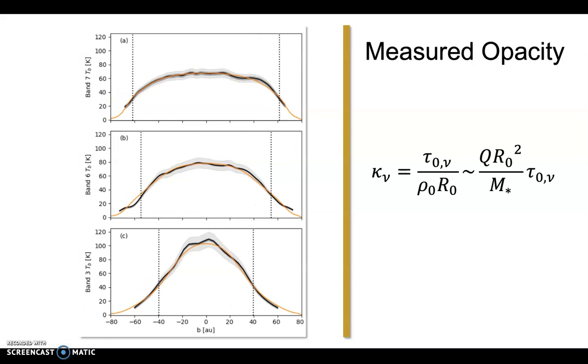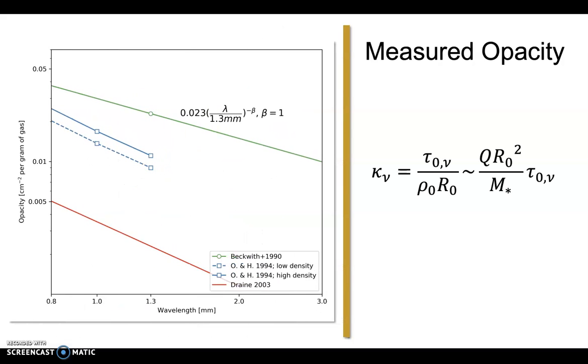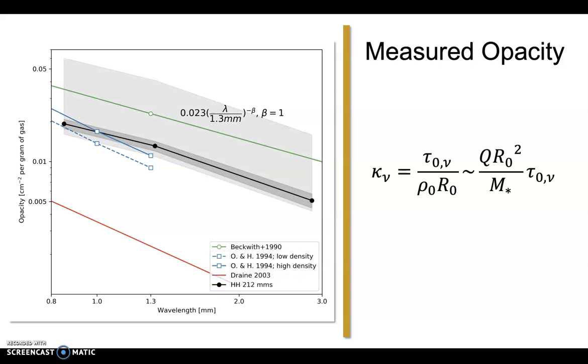So, after all this effort, what we have, then, is the empirically measured opacity per gram of gas. Here is the opacity I showed earlier. Now, where does our measured opacity put us? Interestingly, it is right in between the Beckwith prescription and the calculations by Ossenkopf and Henning. The uncertainty due to just random noise is shown as the dark gray region, but the uncertainty that affects this the most is due to an uncertain stellar mass and an unknown value of constant Q.